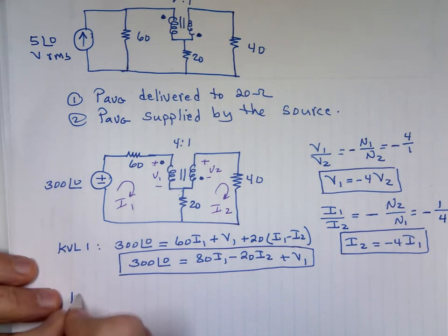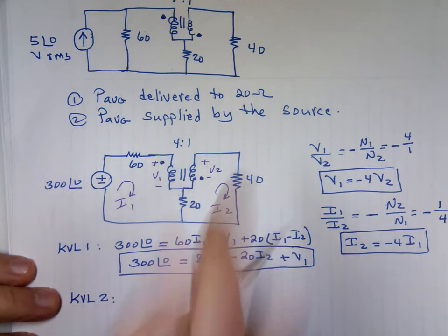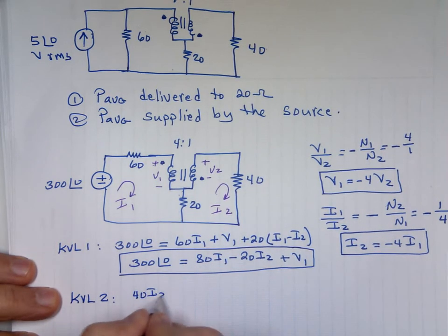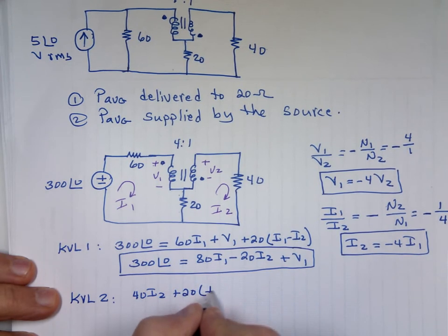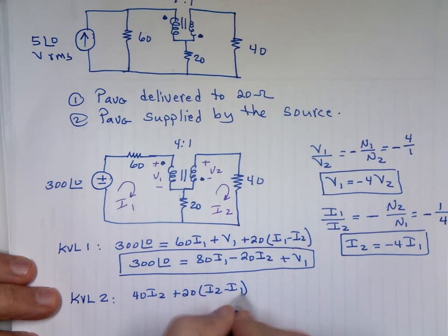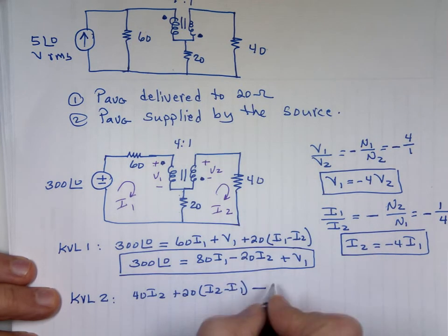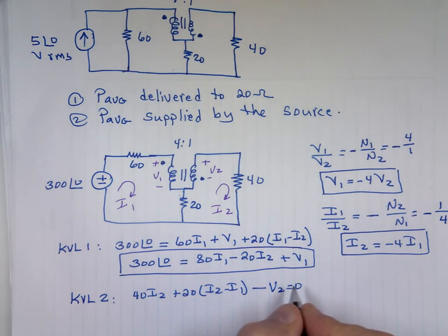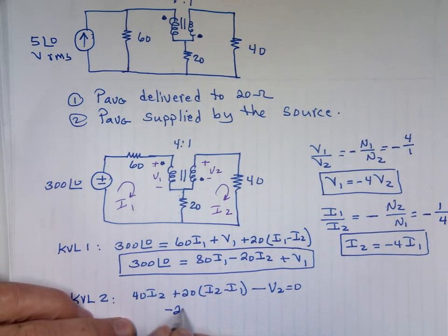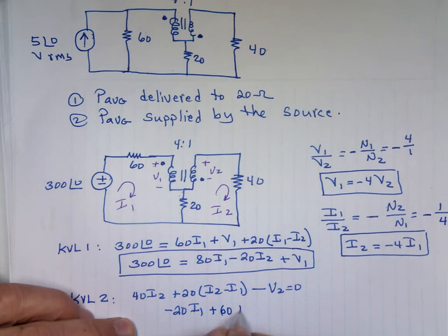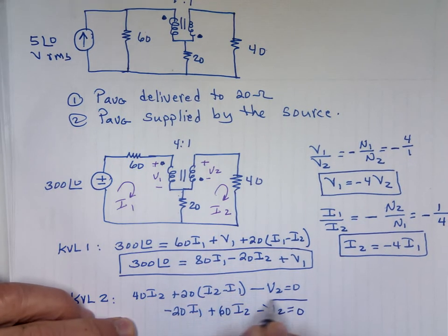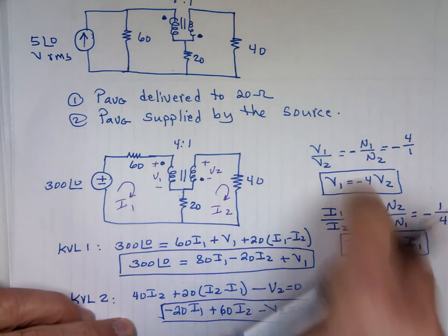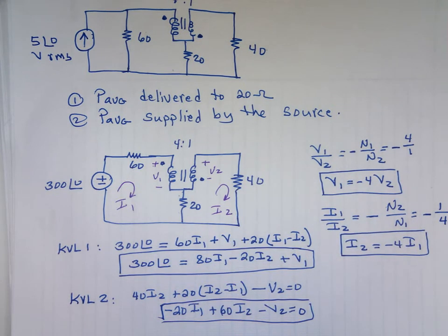And KVL 2, that's on the outside, that's 40 I sub 2 plus 20 times the current going up. Going up is I sub 2 minus I sub 1 minus, notice I'm entering the minus to plus v2. Clean it: negative 20 I sub 1 plus 60 I sub 2 minus v2 is equal to 0. And now I have four equations by four unknowns. I can do quick substitution in them to make it two by two. But really it doesn't matter to me because I have a calculator that does that for me.